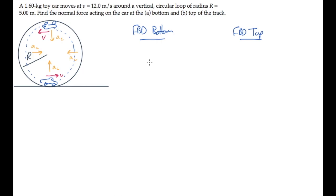At the bottom, there are two forces acting on the car. Its weight is straight down as always, and the normal force, n sub b for bottom, is directed perpendicular to it straight up.